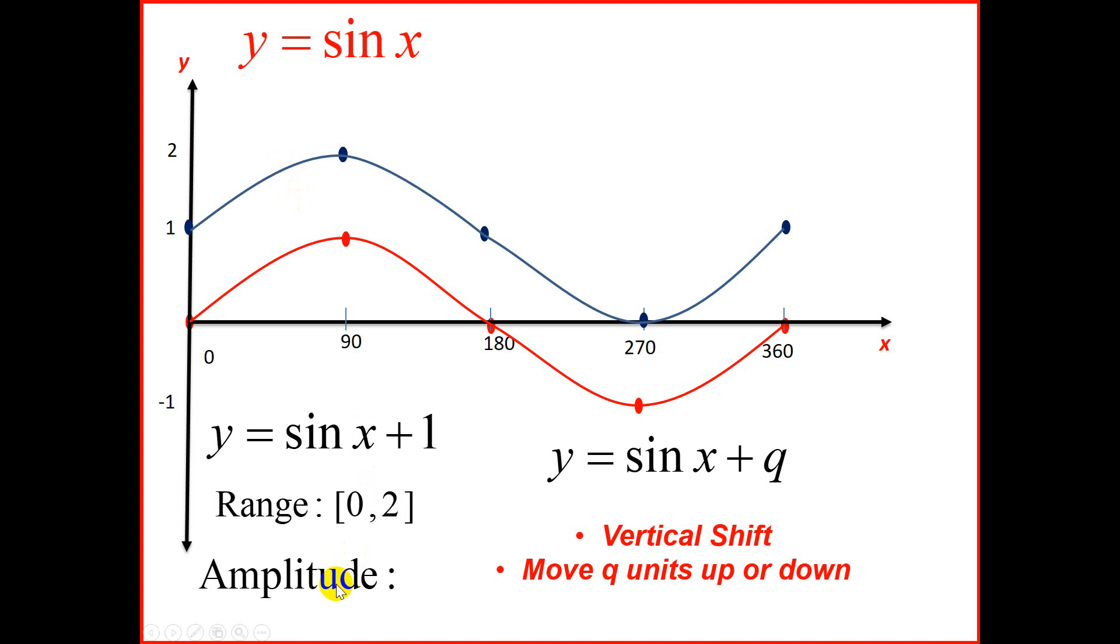The amplitude of the graph, if we find the midline, the halfway or the middle line of the sine graph, it will be right at this point. And from here to the top is 1 unit. So the amplitude is still 1. You'll notice q does not affect the amplitude of the graph.